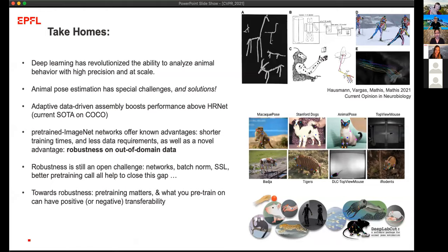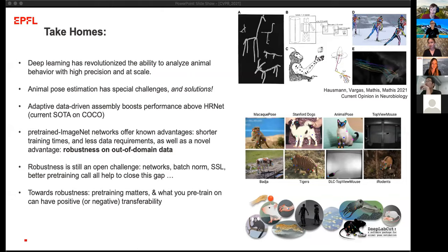Thank you so much, Mackenzie, for a very interesting talk. If anyone in the audience wants to ask questions, you can submit to chat or raise your hand. One question: we know there are several millions of species on Earth — do you think there's any hope of solving the problem of animal understanding holistically, with multi-class predictors giving pose estimation for a majority of those species?